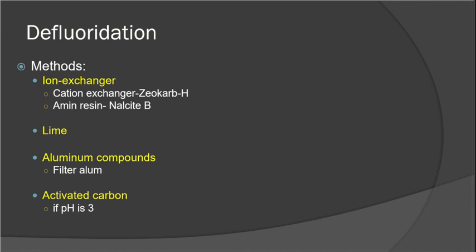Commonly used defluoridation methods also include the ion exchanger method, the lime addition method, and aluminum compounds such as filter alum. Activated carbon is used by passing water through an activated carbon bed. For the ion exchanger method, zeolite or zeo-carb is used — the principle of zeo-carb is applied to achieve defluoridation.